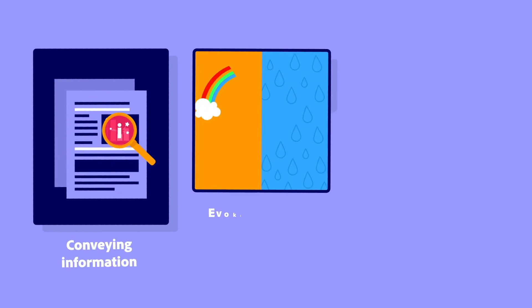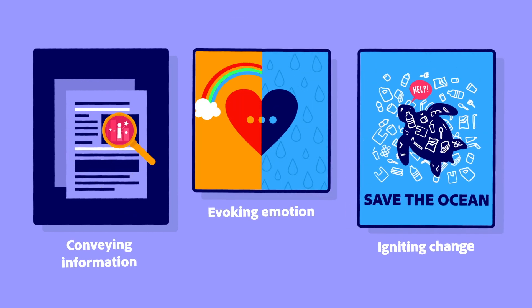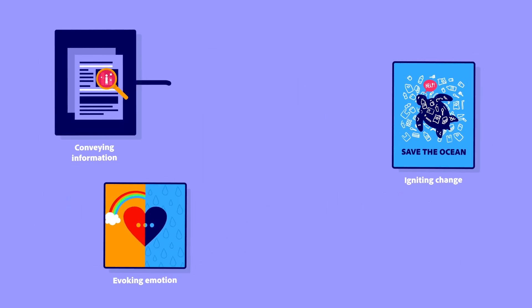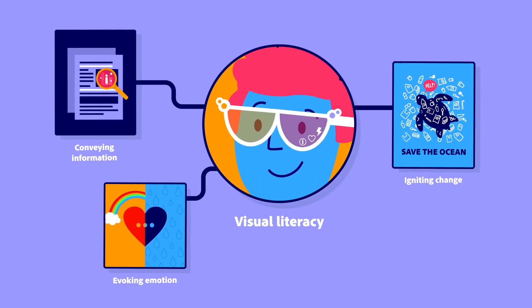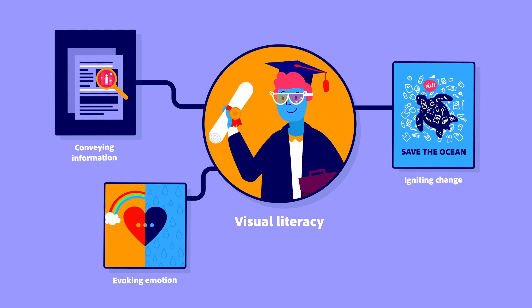Visuals play a powerful role in conveying information, evoking emotion, or igniting actions or change. Understanding how they do that is what we call visual literacy, a cornerstone for 21st century college and career success.